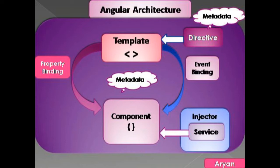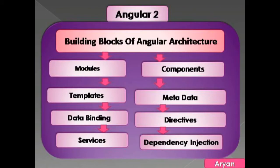Now let's start with Angular 2 architecture. There are basically eight building blocks: Module, Components, Template, Metadata, Data Binding, Directives, Service, and Dependency Injection.